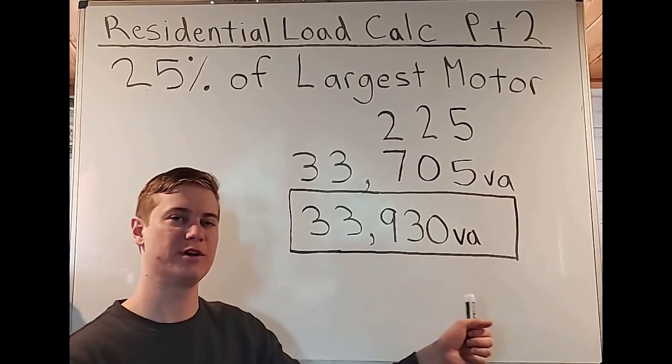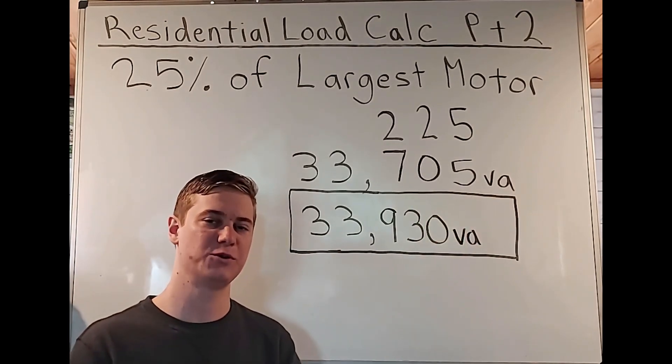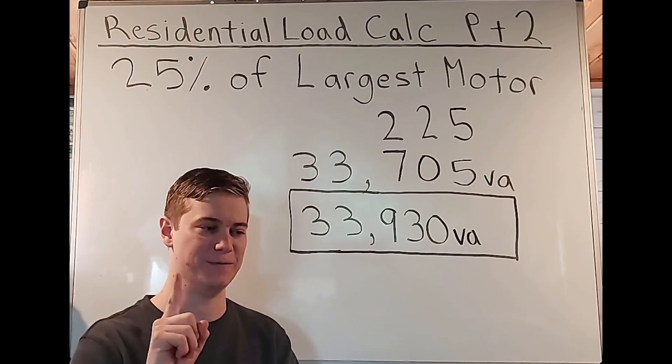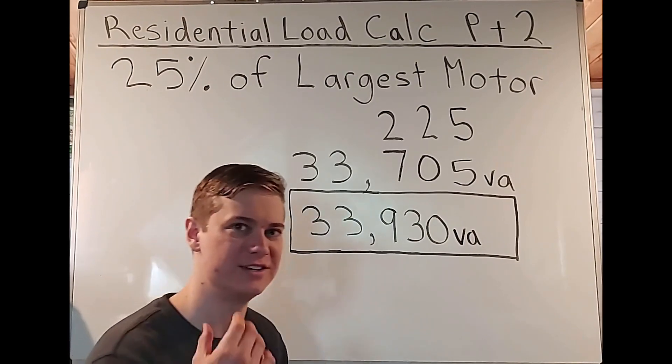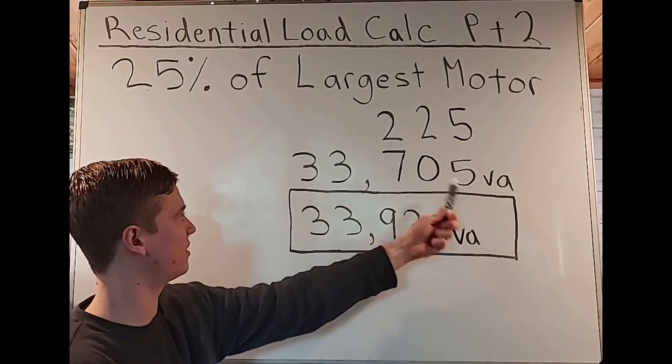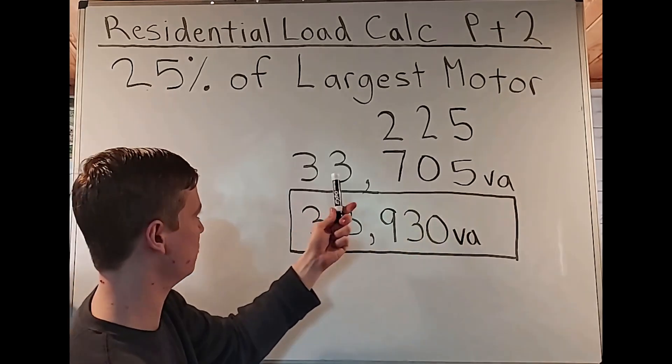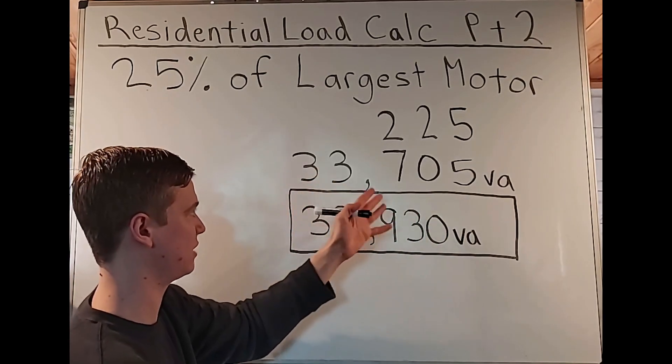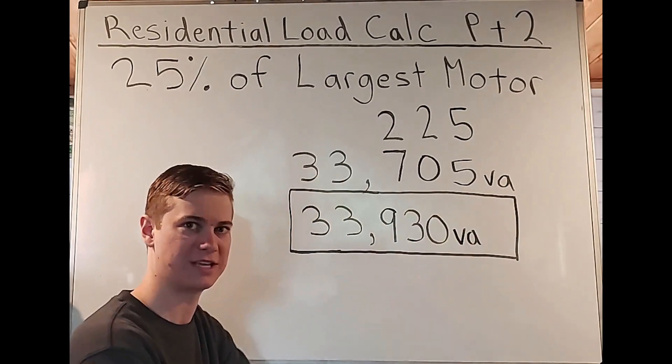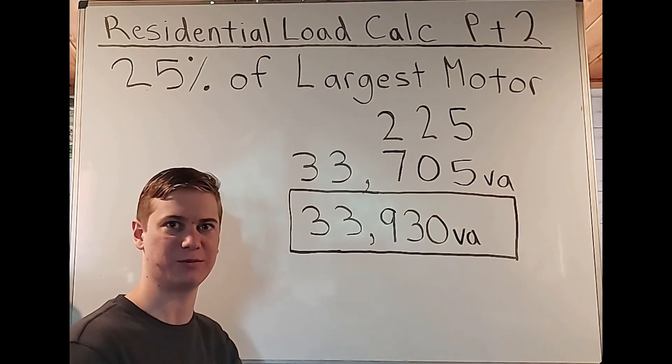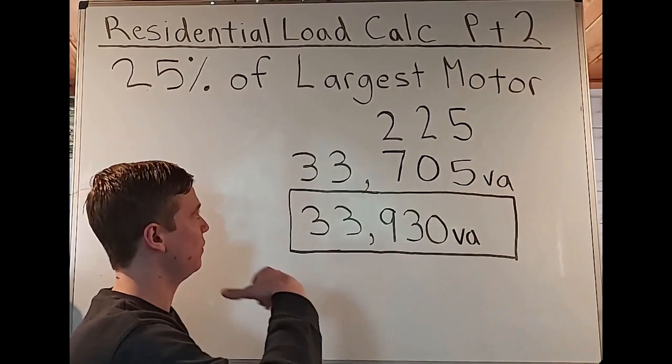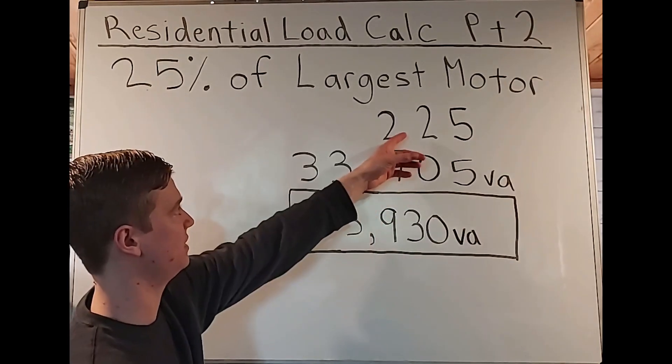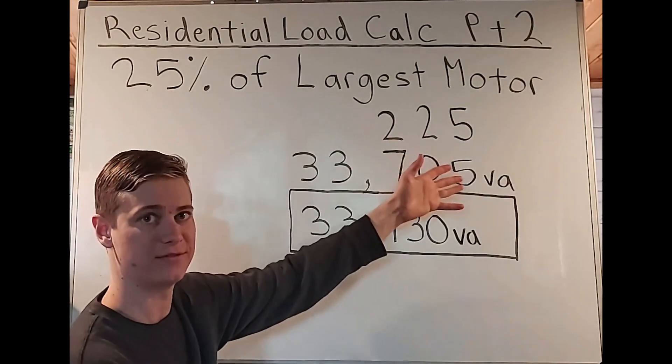So now this is kind of weird, because no matter how many units you have, you're only going to add this one time. So this means if I had a duplex, we had two units on the same feeder, and we came up with this answer 33,705 volt amps, and the same thing, it had a disposal that was the 900 volt amps, we multiplied the 25% and we ended up with 225.